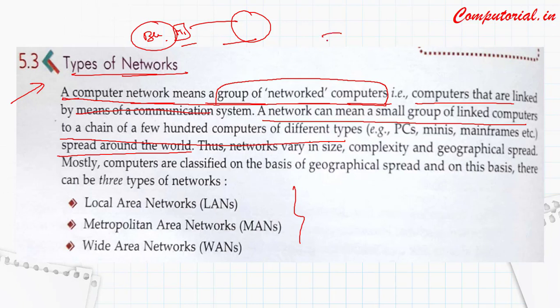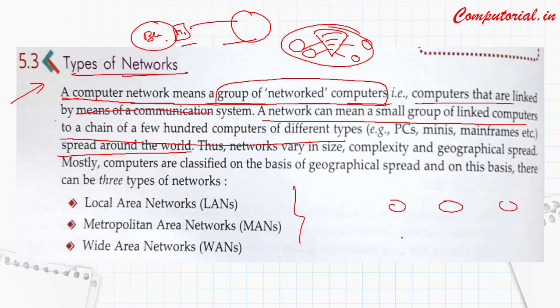If I am using WiFi with many computers connected, that is also a type of computer network. And in our school's computer lab, we have various computers in different rows, all connected through cables - that is also a network. And let's talk about the internet, where we don't see wires but all are still connected to our computers.